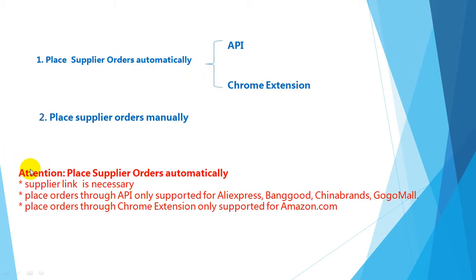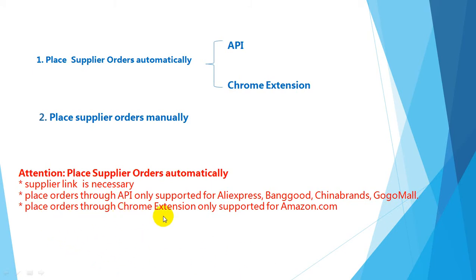Please note: if you place supplier orders automatically, first you must have a supplier link in the order information. Second, placing orders through API is only supported for four suppliers: AliExpress, Banggood, ChinaBrands, and GearMore. Third, placing orders through the crawl extension is only supported for amazon.com.